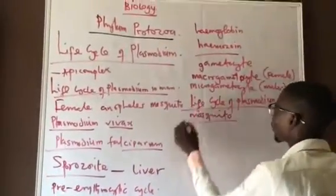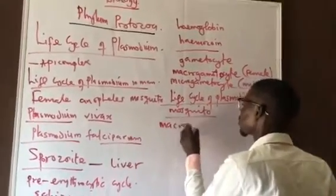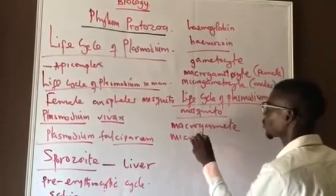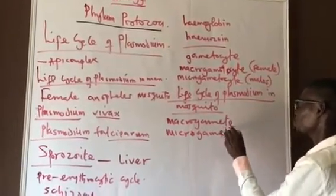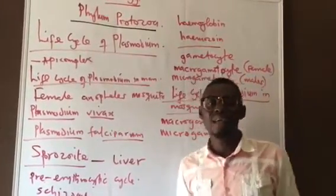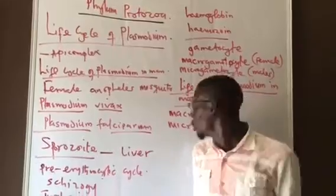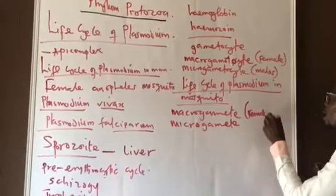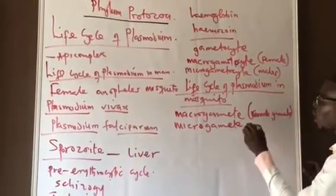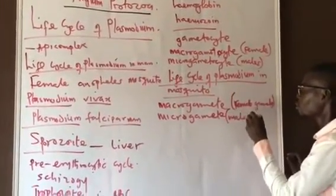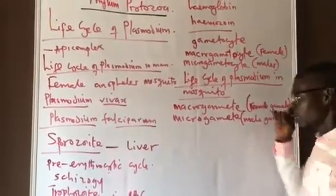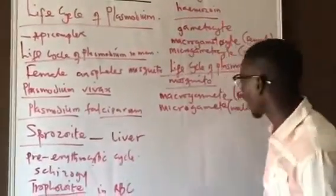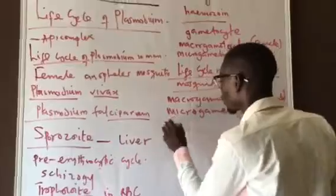The microgametocyte develops into the microgamet (male gamete) and the macrogametocyte develops into the macrogamet (female gamete). Inside the digestive system of the mosquito, fertilization takes place in the stomach. There is fusion of gametes, giving rise to a zygote.